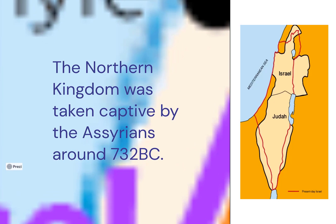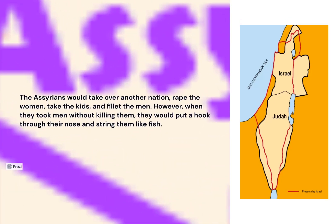The Assyrians were vile people. When they took over another nation they would rape the women, take the kids, and kill the men. However, when they did take men back to Assyria alive, they would put a hook through their nose and string them like fish.